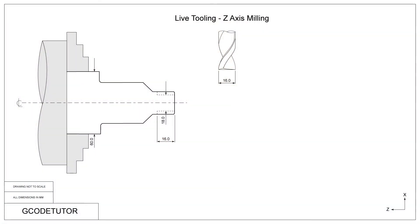We look at the C-axis, which is the rotation of the chuck, and also a Y-axis, as well as our X and Z-axis.